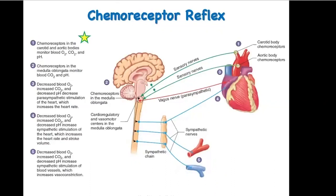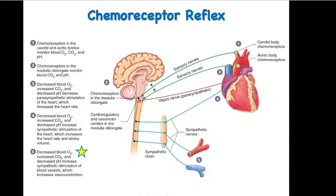Let's review the chemoreceptor reflex. Chemoreceptors in the periphery — in the aortic and carotid bodies — monitor blood oxygen, carbon dioxide, and pH. The central chemoreceptors in the medulla monitor pH based on carbon dioxide levels. When there is a decrease in oxygen, an increase in carbon dioxide, or a decrease in pH, this will decrease parasympathetic input to the SA and AV nodes, and increase sympathetic input to the SA and AV nodes, the myocardium, and smooth muscles in the blood vessels. This will increase heart rate, stroke volume, and vasoconstriction, in turn increasing venous return — sending blood back to the lungs more quickly for gas exchange — returning oxygen, carbon dioxide, and pH levels back to normal.